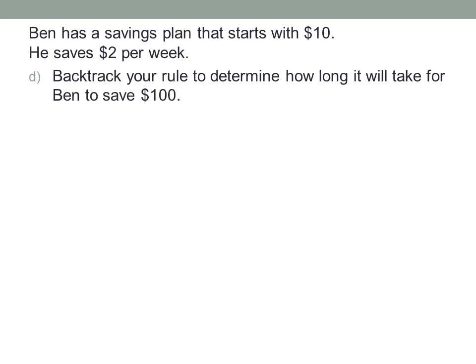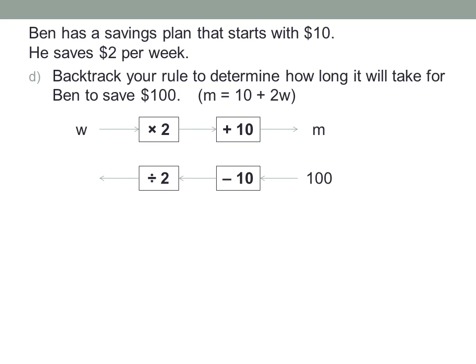And finally, D. Backtrack your rule to determine how long it will take for Ben to save one hundred dollars. And my rule was M equals ten plus two W. Well, when we had a value for W, the number of weeks, what did we do with it? First, we multiplied it by two, and then we added ten. Notice the order here matches the order we do the operations, starting with the variable W, which is not necessarily the order it's written in the rule. Work your way outwards starting from the independent variable, not just from what happens to appear on the left in the way the rule is written down. But here we have a value for M, how much Ben wants to save. It's one hundred dollars. So backtrack the rule by doing the opposite operations in the opposite order.